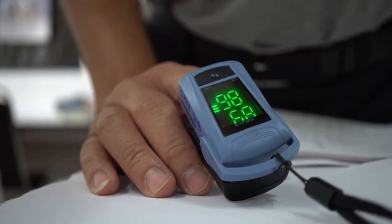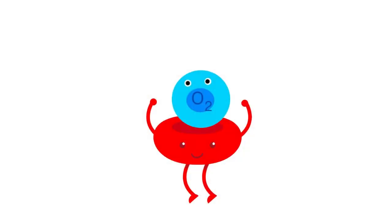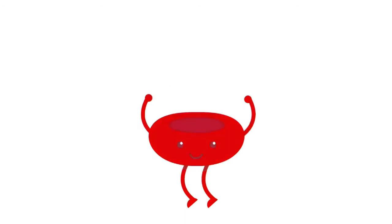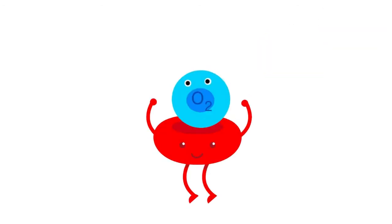So how does a pulse oximeter function? Before we understand how a pulse oximeter works, let us first understand how hemoglobin binds to oxygen and changes the color of our blood.